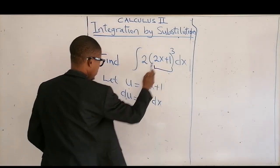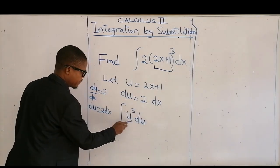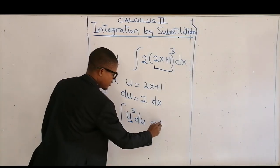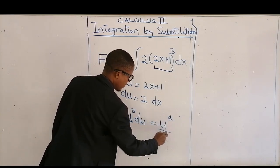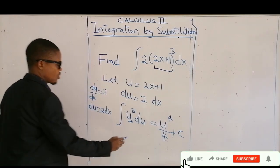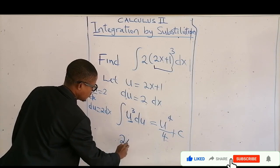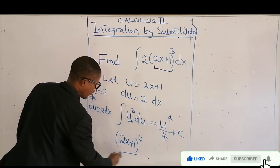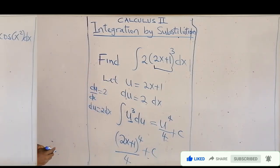So we can now go back to this question. This question will now become the integral, which will be equal to u to the power 3 plus 1, that's 4, all over 4, plus c. And then finally, we are going to substitute back your u. Your u is 2x plus 1, so the answer is (2x+1) to the power 4, all over 4, plus c. And that finishes that question.